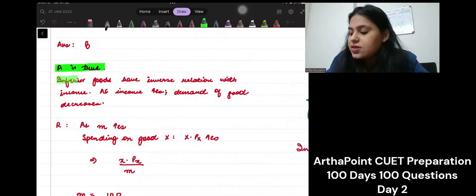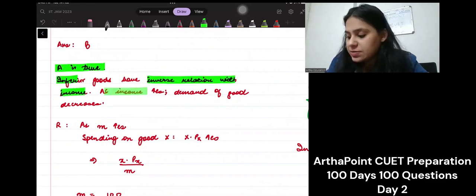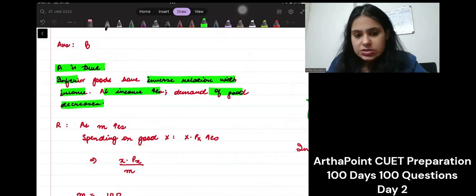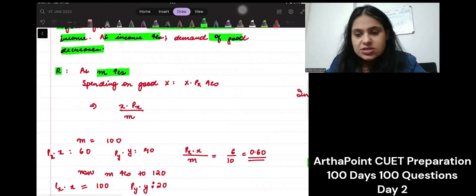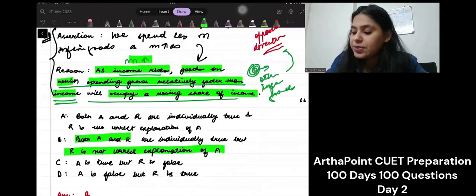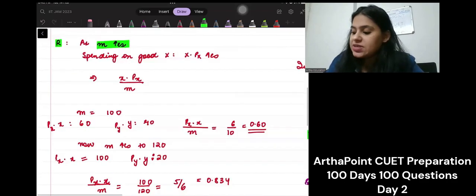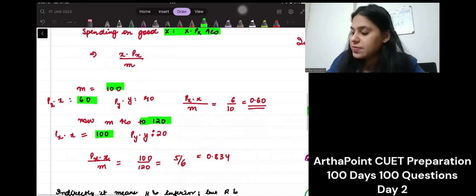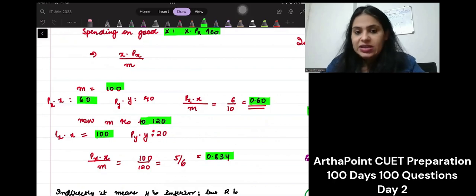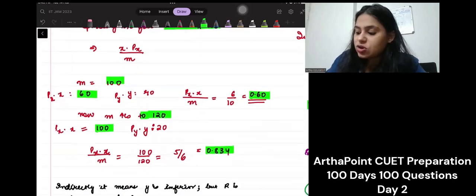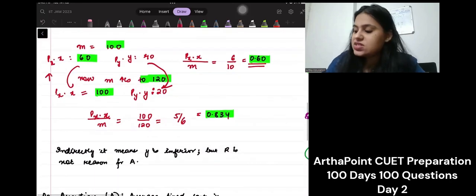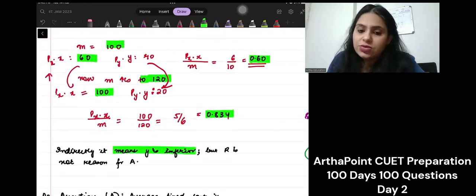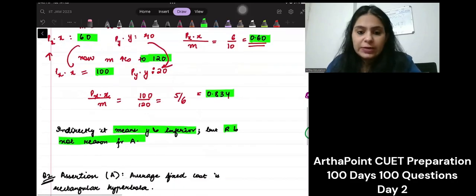Let's go through my explanation. A is true - inferior goods have inverse relation with income. As income increases, demand of the good decreases. The reason says when income is increasing, spend more on the good. I changed my income from 100 to 120, I increased my expenditure on one good. Indirectly, when I'm increasing expenditure on one good, it means I am reducing expenditure on the other good. So indirectly this statement is saying that the other good is inferior. But R is not the reason for A.